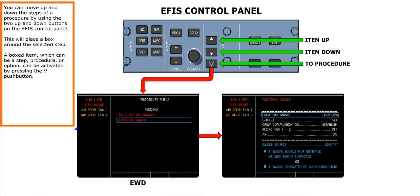You can move up and down the steps of a procedure by using the two up and down buttons on the EFIS control panel. This will place a box around the selected step. A boxed item, which can be a step, procedure, or option, can be activated by pressing the V push button.